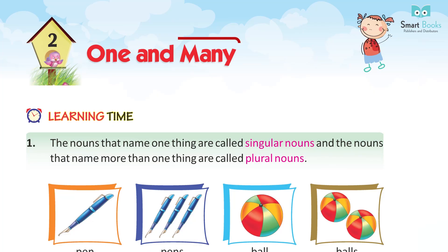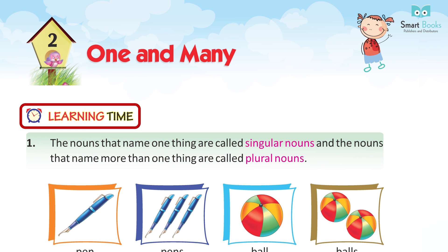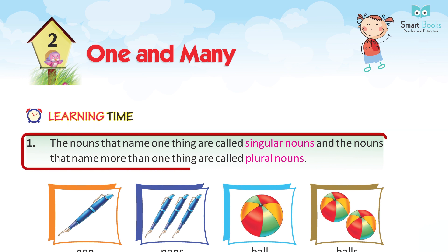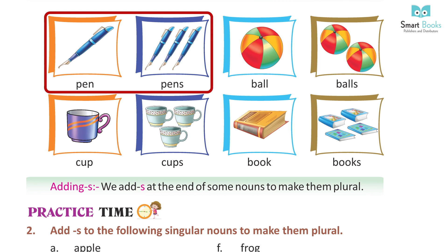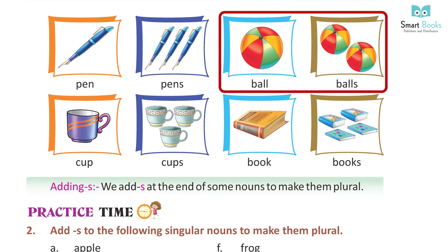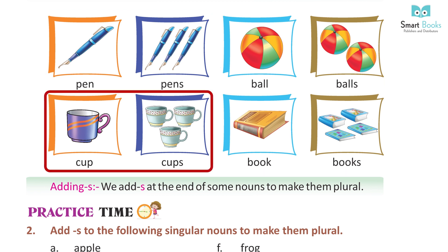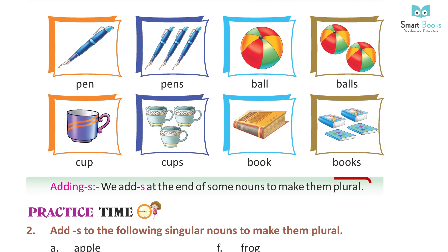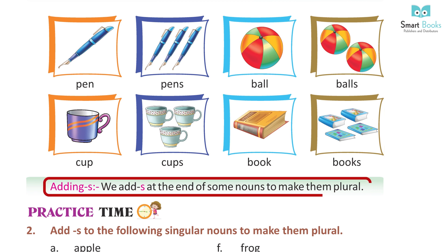Chapter 2: One and Many. Learning Time 1. The nouns that name one thing are called singular nouns, and the nouns that name more than one thing are called plural nouns. Pen, pens. Ball, balls. Cup, cups. Book, books. Adding S: We add S at the end of some nouns to make them plural.